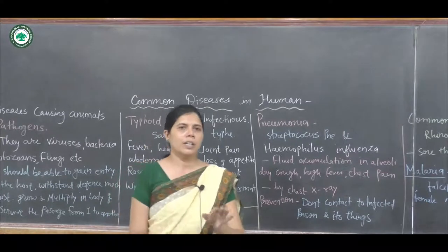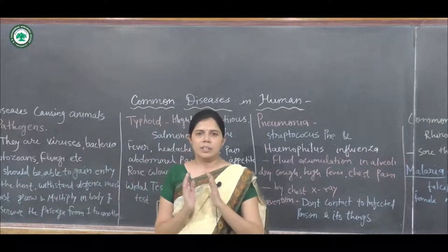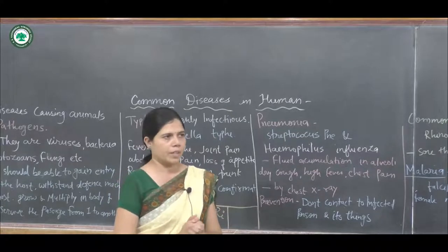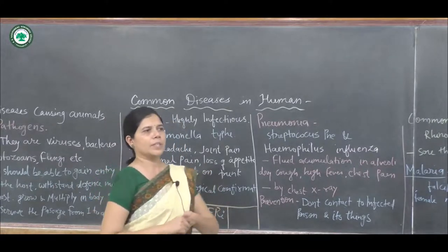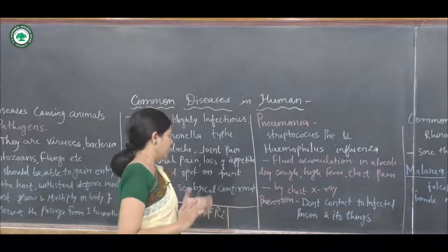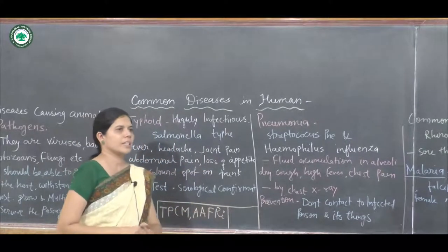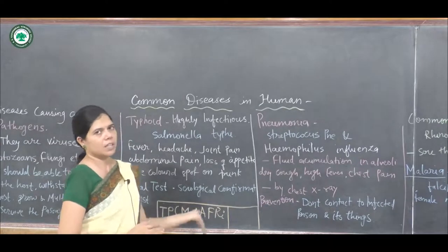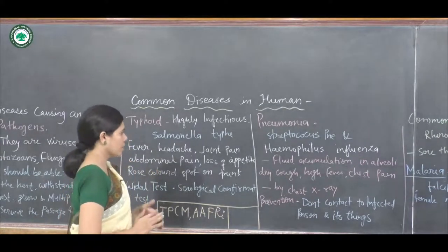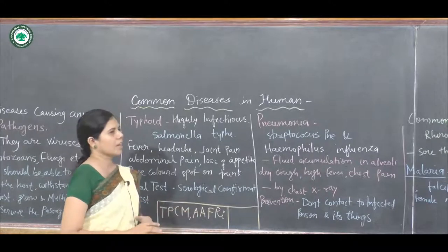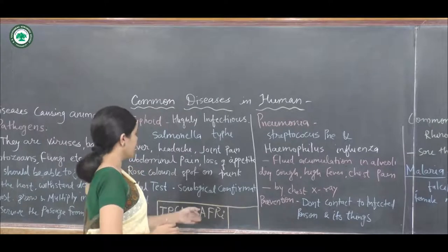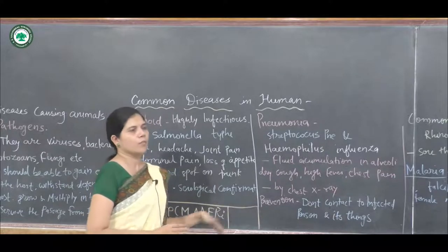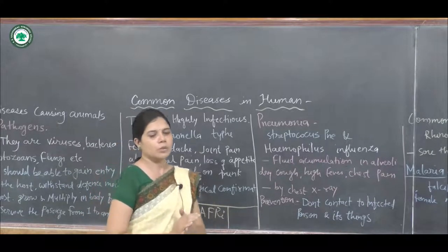First, I'm telling you the trick to learn all the diseases. The trick is TPCM AFRI: T for Typhoid, P for Pneumonia, C for Common Cold, M for Malaria, first A for Amoebiasis, second A for Ascariasis, F for Filariasis, and RI for Ringworm.